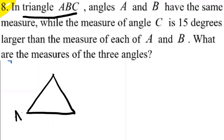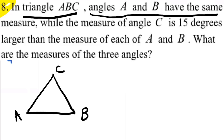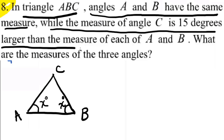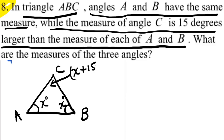Label the angles A, B, C — it doesn't matter how you choose to label them. Now, 'angles A and B have the same measure': we randomly assign a variable to one angle. Suppose we call angle A x degrees — then angle B is also x degrees because it has the same measure. Then it says the measure of angle C is 15 degrees larger than each of A and B, so angle C is x plus 15 degrees.